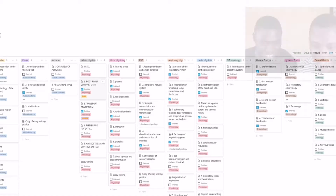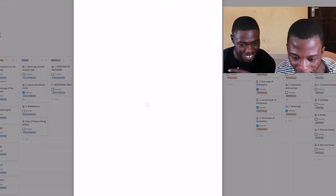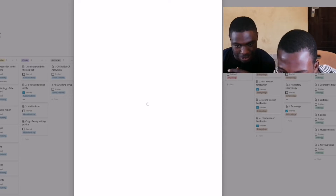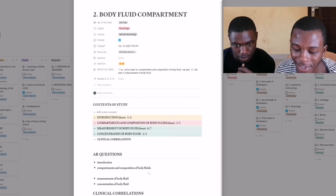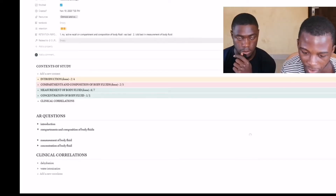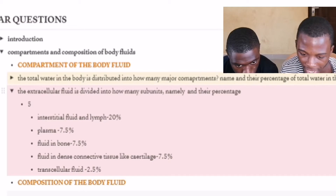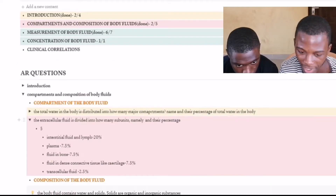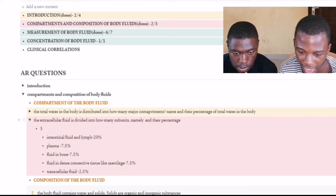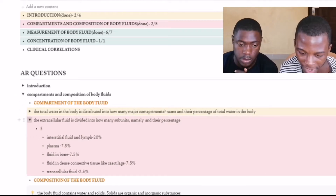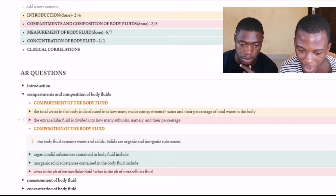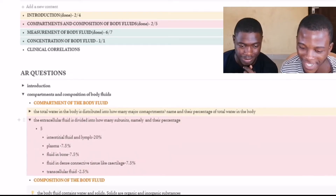Okay so this is how it works. Let me open general principles — body compartment and body fluid. This was our second topic in general principles. This is how the toggle function works. This question says the extracellular fluid is divided into many subunits — I'm supposed to name them and test their percentages. So once I open the toggle I figure out the answer; I answer them before I open the toggle. Once I open it I see the answers to the question — the extracellular fluid has five compartments, listed here with their percentages. Depending on if I remember it or not I can color-code it. Right now it's in red because when I was practicing I didn't remember.